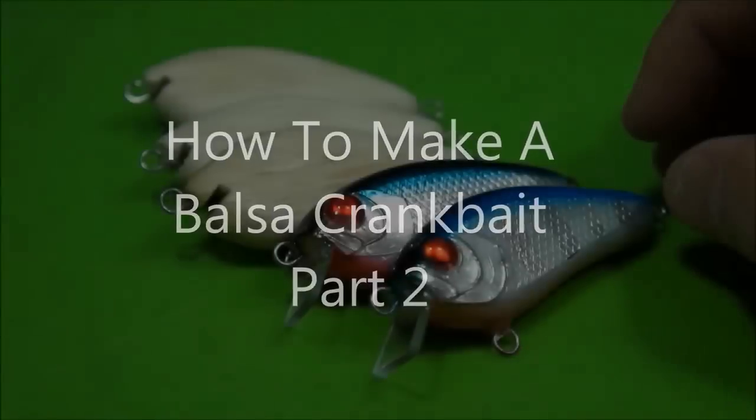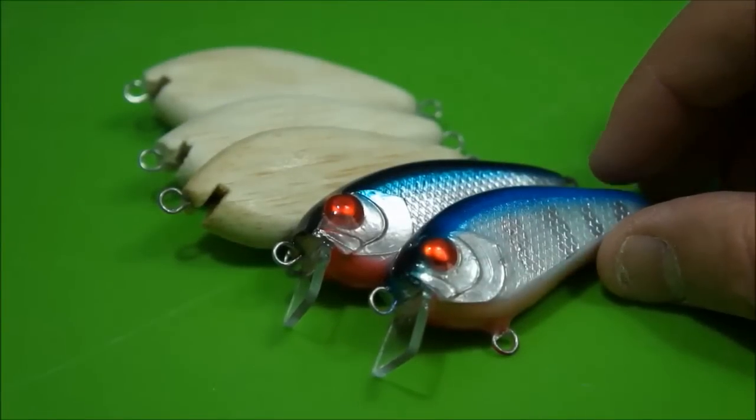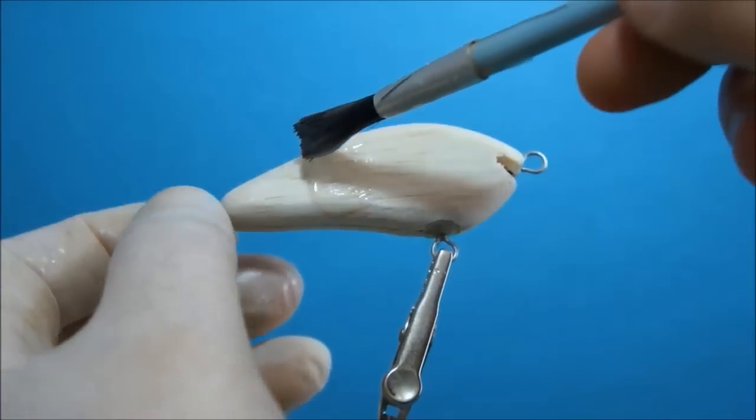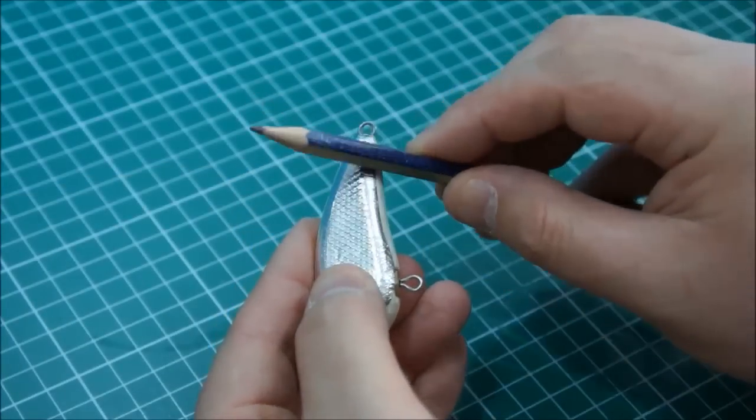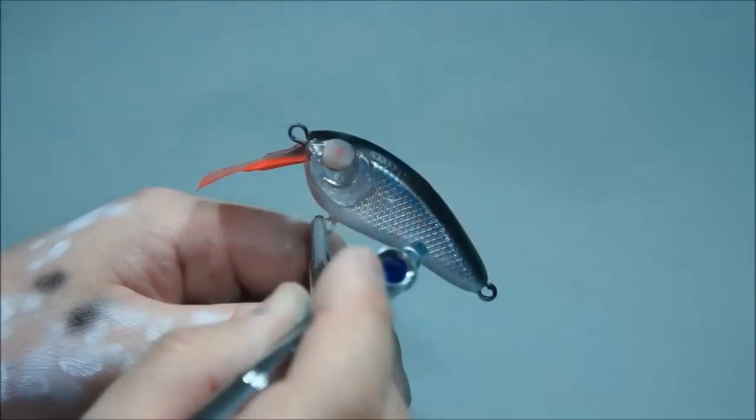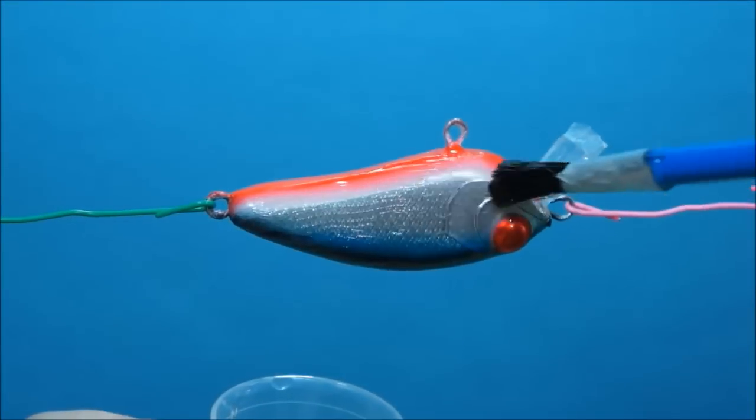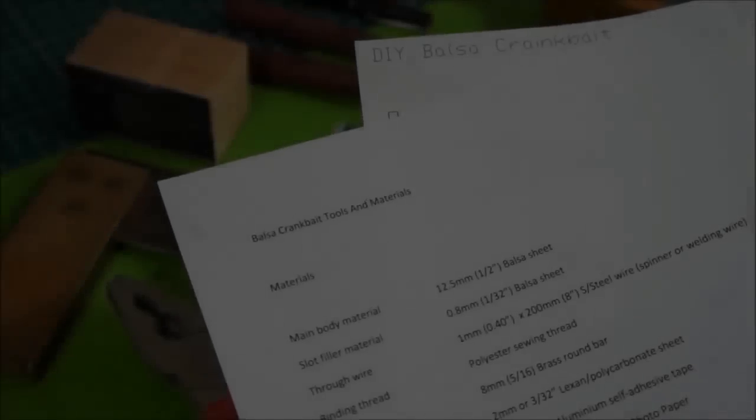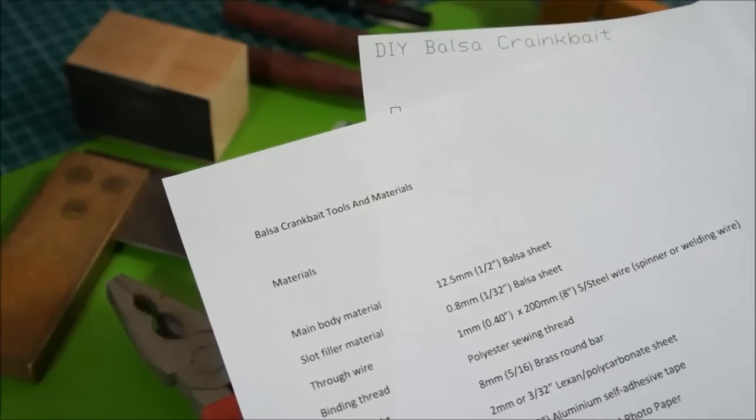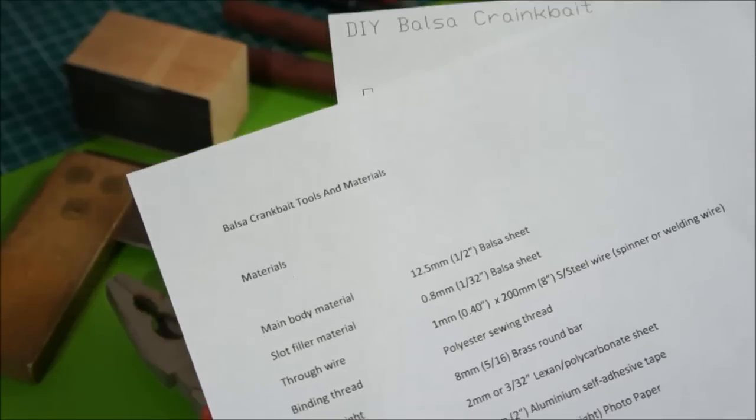Welcome to the second and final part of this video on making balsa crankbaits. This video deals with finishing the lure body from sealing through foiling the lure, creating the faces, making a lip and fitting it, painting, clear coating, and finally taking it for a swim. As with the first video, I'll make available a full list of tools and materials. You should be able to find that list in PDF form by following the link to my blog.